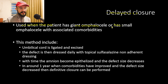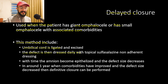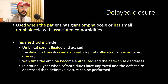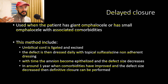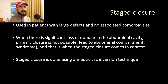Delayed closure is used when the patient has a giant omphalocele, small omphalocele with associated comorbidities or anomalies. This method includes umbilical cord ligation, excision, and the defect is then addressed daily with topical silver sulfadiazine non-adherent dressing. Over time, the amnion becomes epithelialized and the defect size decreases. After one to two years, when comorbidities have improved and the defect is smaller, definitive closure can be performed.